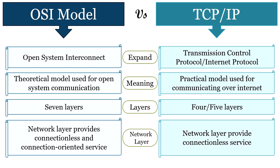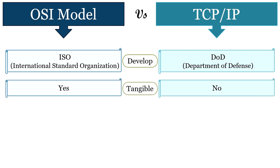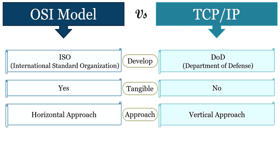The network layer of the OSI model provides both connectionless and connection-oriented service, whereas the network layer of the TCP/IP model provides connectionless service only. The OSI model is developed by ISO, that is International Standard Organization, whereas the TCP/IP model is developed by DOD, that is Department of Defense. OSI model is a tangible model, whereas TCP/IP is a non-tangible model.